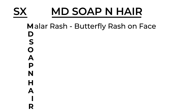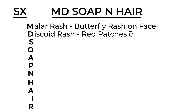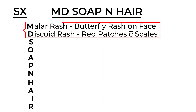The D is for discoid rash, which is a little different — it consists of red patches with scales that can appear on the skin. These top two letters are related to the skin manifestations of lupus. One more skin manifestation to include here is alopecia, or loss of hair.